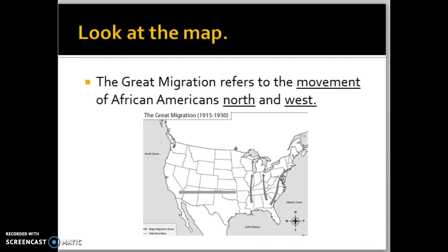If you think about something familiar to you — birds migrate during the different seasons of the year, whether they're going south or north — that's the same concept we're talking about with the migration of African Americans here. If you forget what that word means, you can think about the birds.